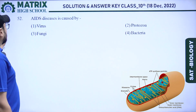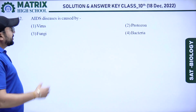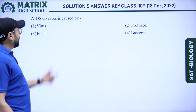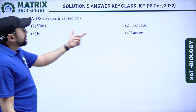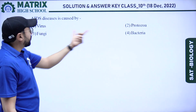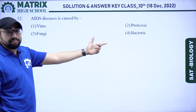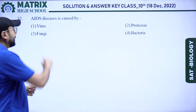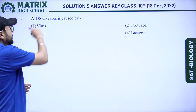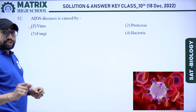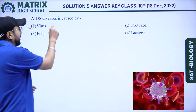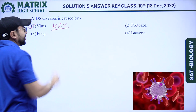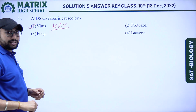Next question: AIDS disease is caused by — option A: virus, protozoa, fungi, and bacteria. The right answer is virus — HIV virus that causes AIDS.